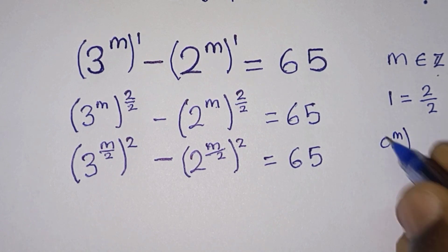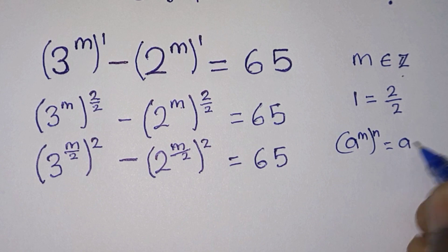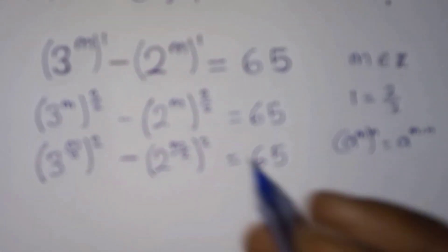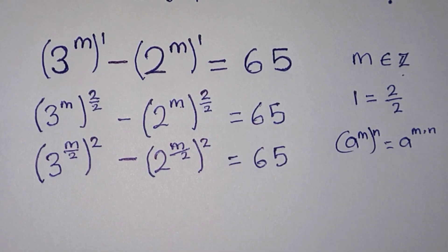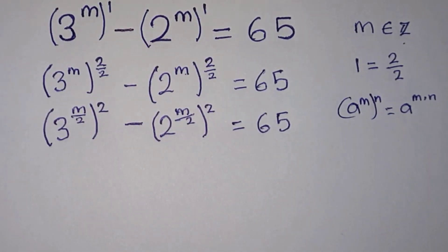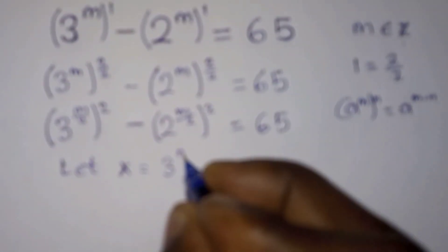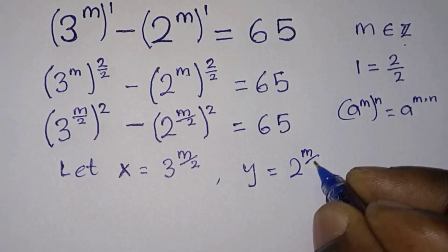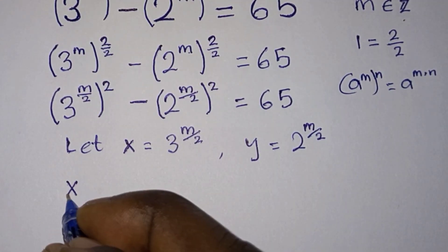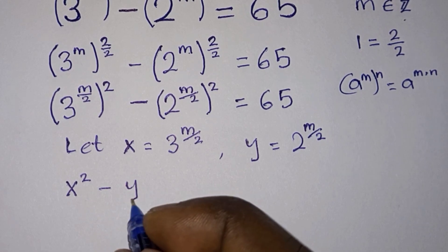We apply the rule: a to the power m to the power n is the same as a to the power m times n. So multiplying by m divided by 2, the equation now becomes x squared minus y squared is equal to 65, where x = 3^(m/2) and y = 2^(m/2).